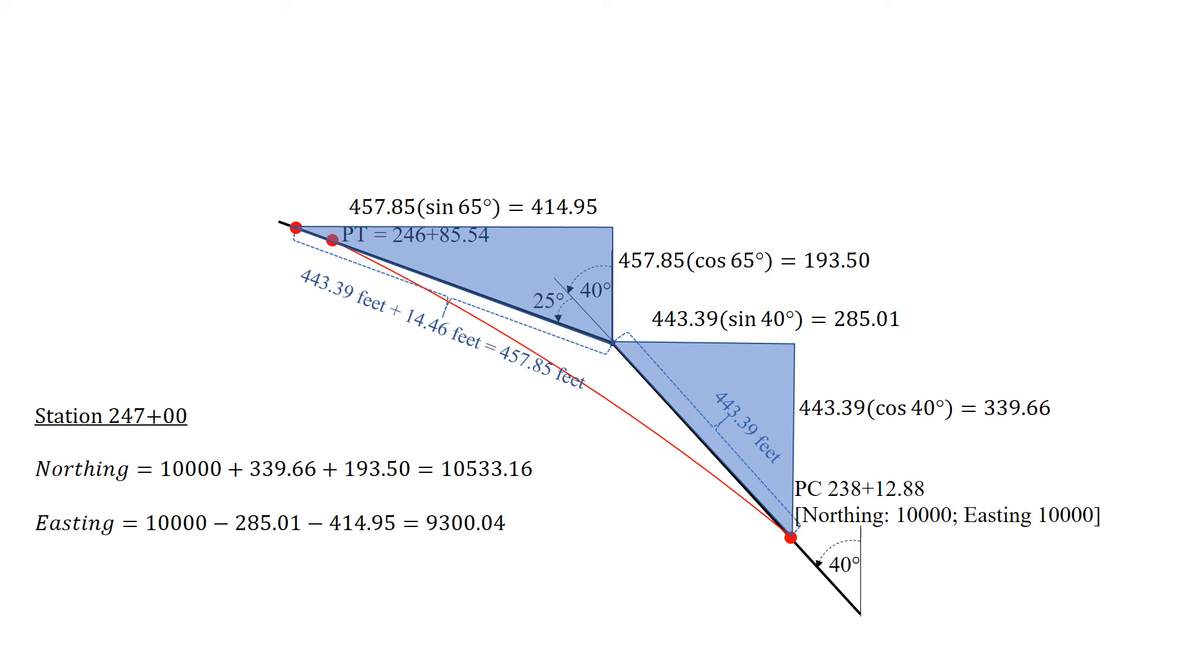Now to find the coordinates for station 247. The reason we can approach it this way is because it's not on the curve. If the point was on the curve, it would be more complex to determine those coordinates. But because we're not on the curve, we can just move along those tangents. The stationing is different - this is not stationing, this is finding those XY coordinates in terms of northing and easting.